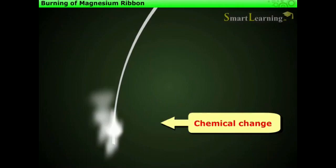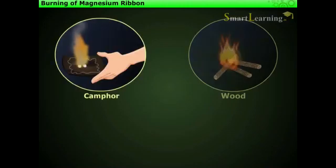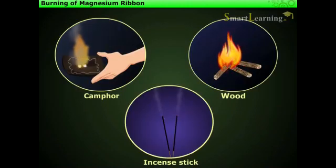Thus, burning of magnesium ribbon is a chemical change. In fact, burning of any substance such as camphor, wood, or an incense stick is a chemical change and it produces heat.